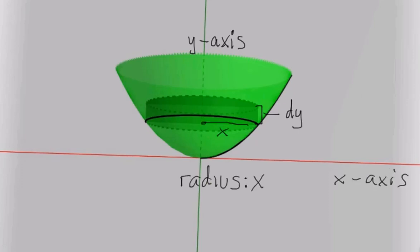The radius of the disc is x, the horizontal distance from the y-axis to the graph. But in order to get our variables to match, let's get the radius in terms of y.